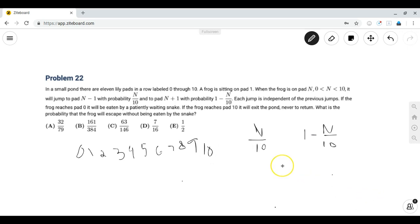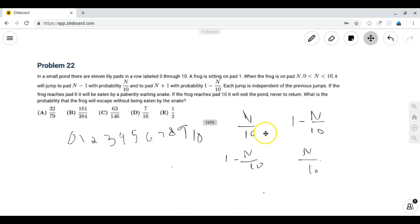Since we want to exploit symmetry and not create too many equations, let's consider what happens when the frog is on pad 10 minus n. If it's on pad 10 minus n then the probability it goes to n minus 1 is 1 minus n over 10 and it goes to n plus 1 with probability n over 10. We see that these two are equal and that these two are equal.